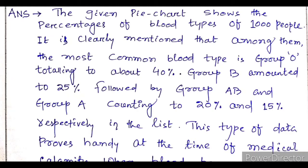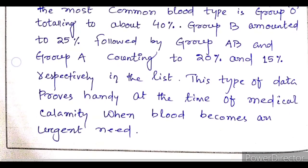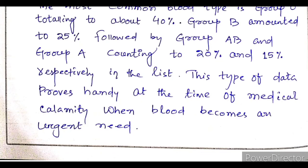'Group B amounted to 25 percent, followed by Group AB and Group A, counting to 20 percent and 15 percent respectively.' As the diagram shows: 40 percent Group O, 25 percent Group B, Group AB 20 percent, and Group A 15 percent — mentioned in the wording. 'This type of data proves handy at the time of medical calamity when blood becomes an urgent need.' Handy here means useful.